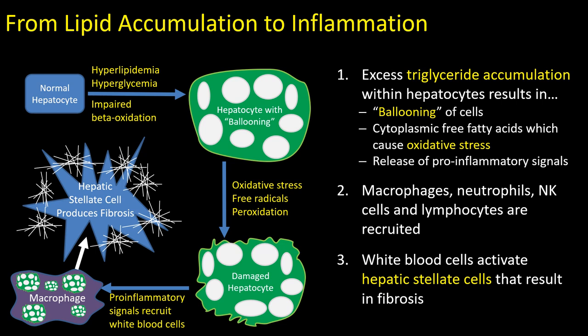Looking more closely at how lipid accumulation leads to inflammation: you start with a normal hepatocyte, then get hyperlipidemia and hyperglycemia causing ballooning of the hepatocytes. Ballooning leads to increased free fatty acids, resulting in oxidative stress within the hepatocyte. That oxidative stress causes free radical formation, peroxidation of lipids, and damages the hepatocyte and cell membrane. The damaged hepatocyte creates pro-inflammatory signals that recruit white blood cells, particularly macrophages, which then stimulate the hepatic stellate cells, leading to fibrosis.